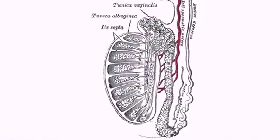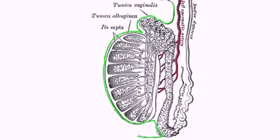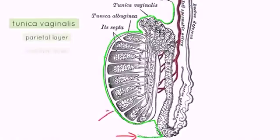The testes are actually surrounded by a capsule. This is formed by a layer of peritoneum which is brought down with the testes when it descends from the abdomen. This connection between the abdomen and the testes eventually gets broken, leaving the testes surrounded by its own separate capsule. The outer capsule, drawn here in green, is called the tunica vaginalis, and it has a parietal layer and a visceral layer.